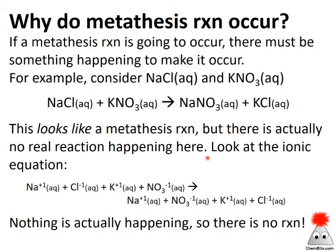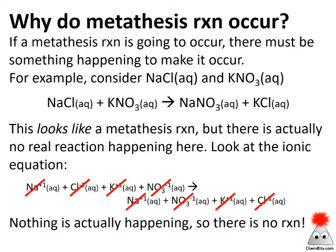Even though we wrote it out as if it were a metathesis reaction, we have to look more closely at what's happening. In aqueous solution, sodium chloride isn't sodium chloride units stuck together — it's really sodium ions and chloride ions. Same with potassium nitrate, sodium nitrate, and potassium chloride. If we expand this to ionic form, everything cancels out, so there really is no chemical reaction taking place here.